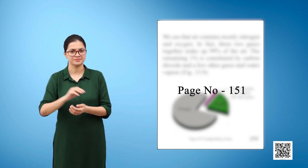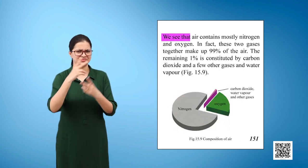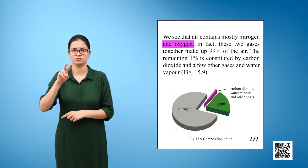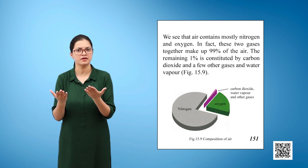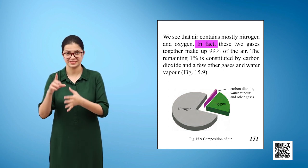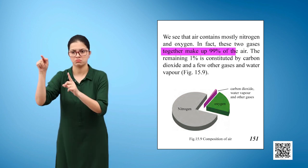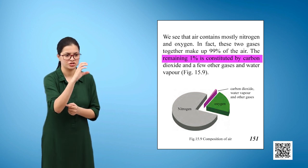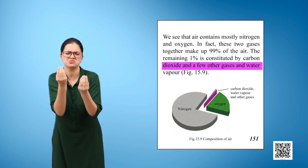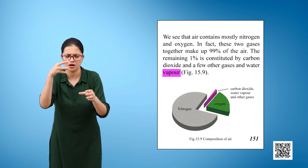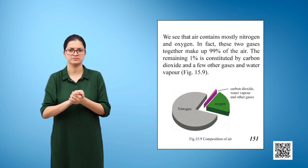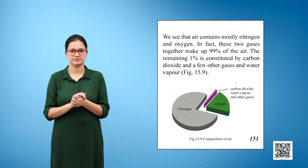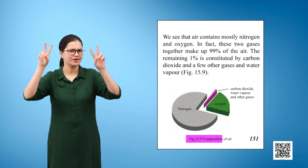Page 151. We see that air contains mostly nitrogen and oxygen. In fact, these two gases together make up 99% of the air. The remaining 1% is constituted by carbon dioxide and a few other gases and water vapour. Figure 15.9 shows composition of air.